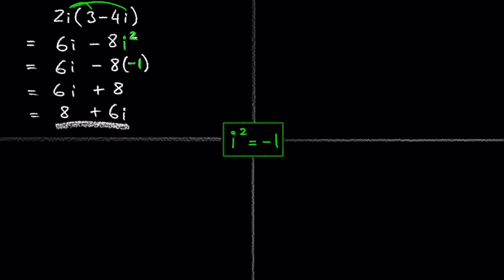In standard form, we always write the real part first, which is 8, and we write the imaginary part second, which is 6i.